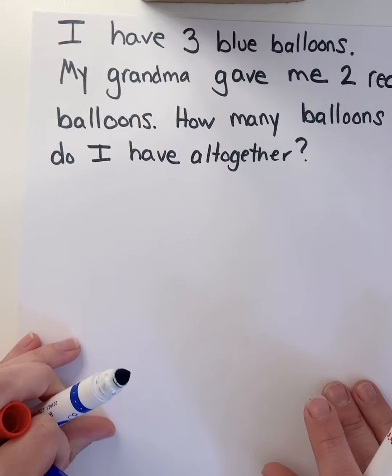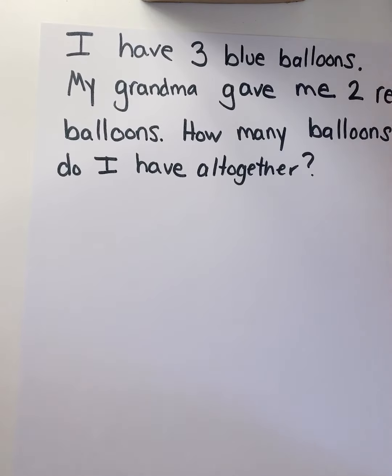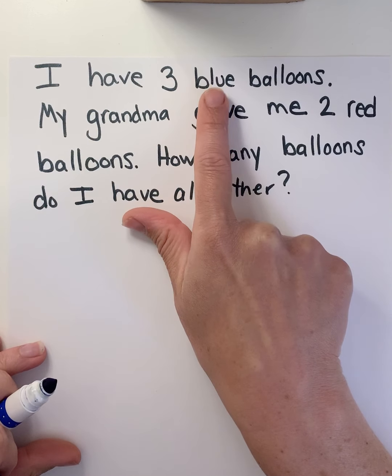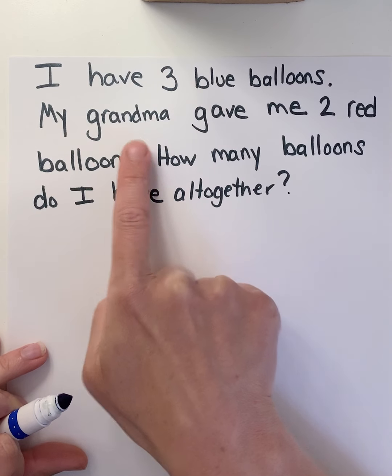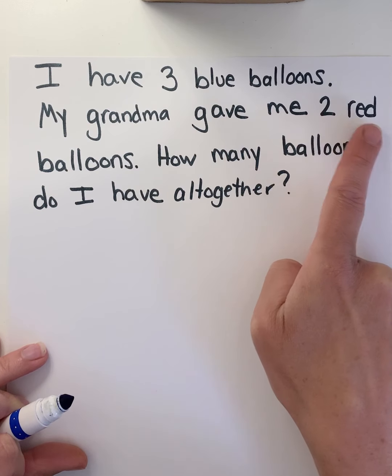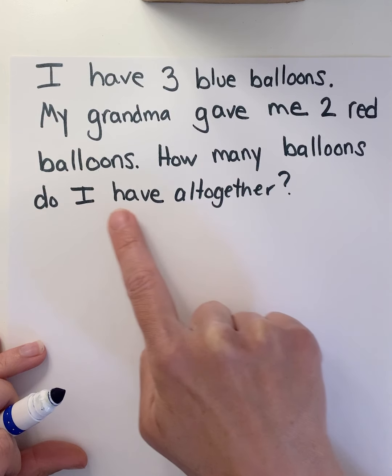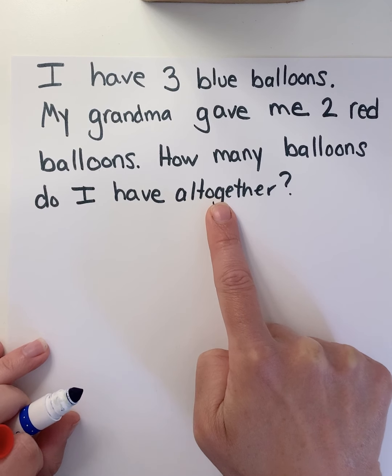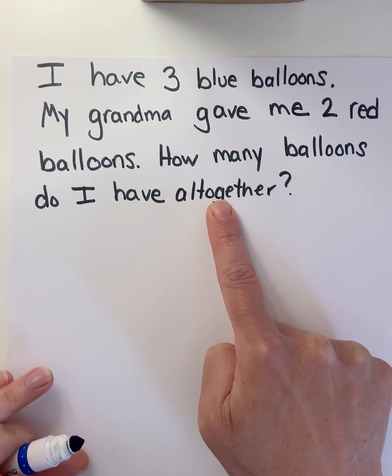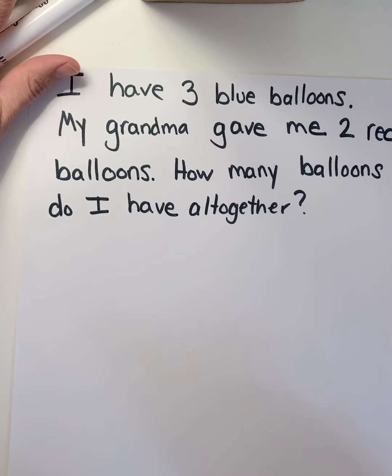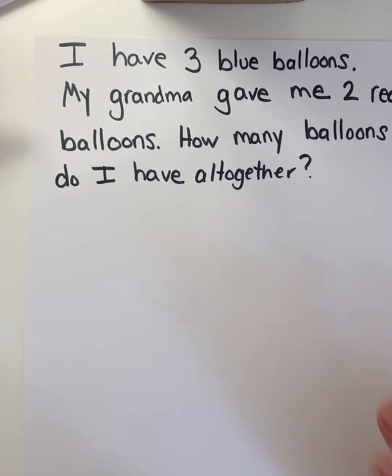I'm going to try another one with you, and then you are going to practice doing one all on your own and take a picture of it for me. Let's listen to this story problem: I have three blue balloons. My grandma gave me two red balloons. How many balloons do I have all together? It might say 'all together' or it might say 'in all.' So my grandmother is going to give me some more balloons.